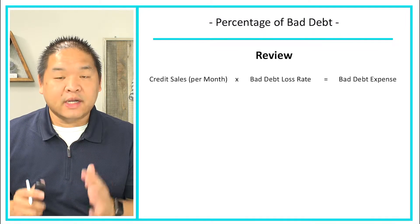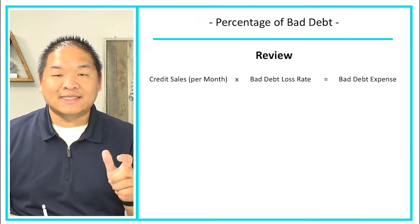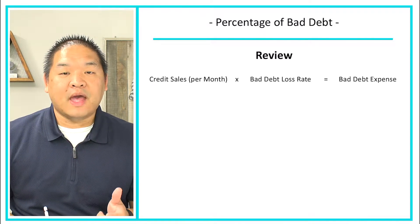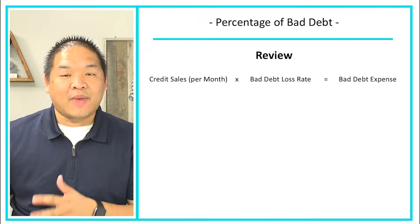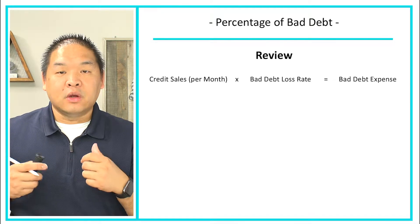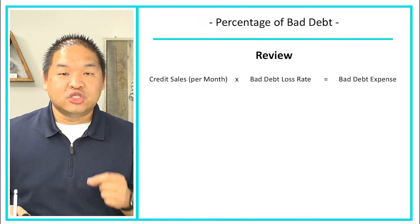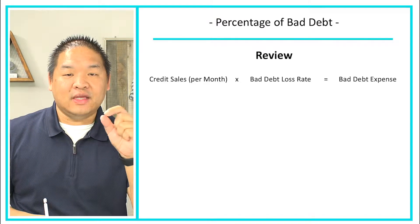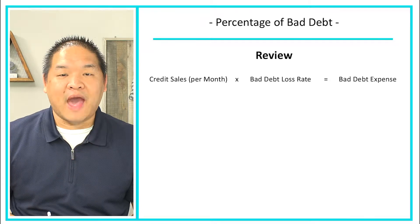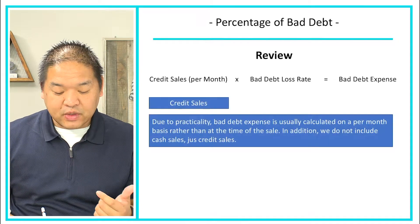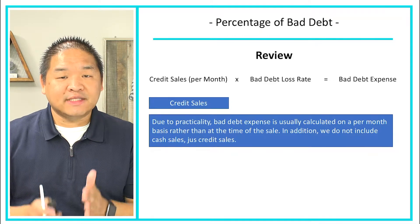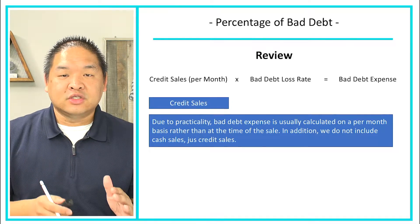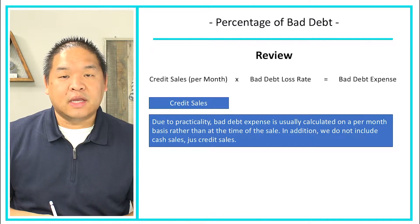We're going to use this equation, where we take credit sales per period and multiply it by the bad debt loss rate to get our bad debt expense. Once we have that, we'll go ahead and do the journal entry to book the bad debt expense and put money into the cookie jar — the allowance for bad debt. We know that we're looking for just the credit sales, not the cash portion of the sales.